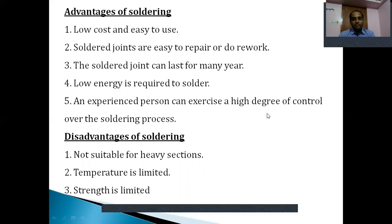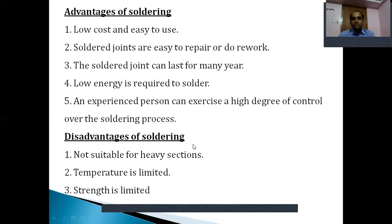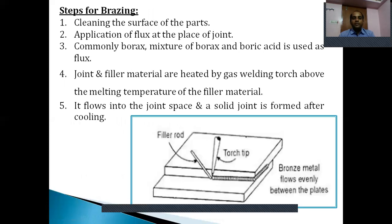The disadvantages of soldering: it is unsuitable for heavy sections, because the temperature is less than 450 degrees Celsius so you can join only thin metal sheets — if they have high thickness you cannot carry this process. The temperature is limited, the joint performed is not permanent but temporary, and the joint strength is a little bit less in nature.